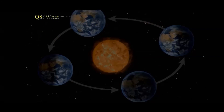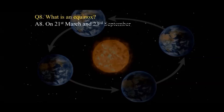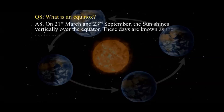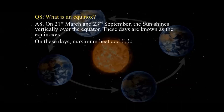What is an equinox? On 21st March and 23rd September, the Sun shines vertically over the equator. These days are known as equinoxes. On these days, maximum heat and light is received at the equator.